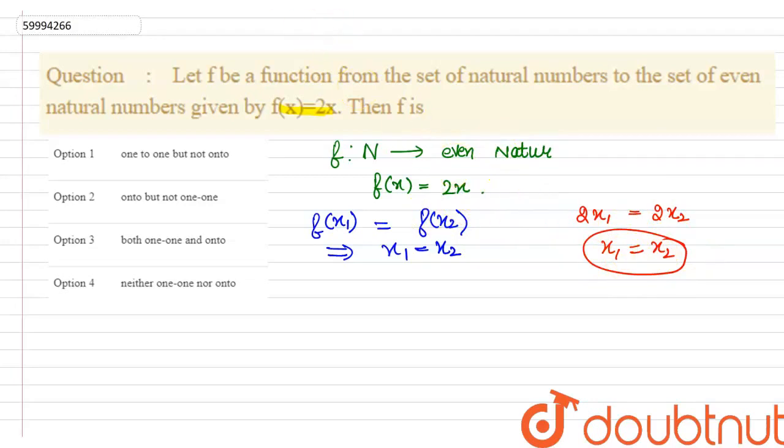Now, we check onto. To check onto, what do we see? Our codomain - is it equal to the range?